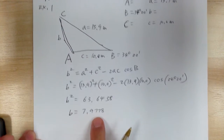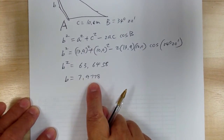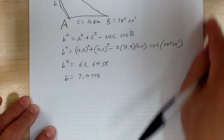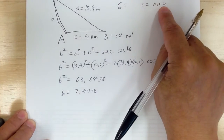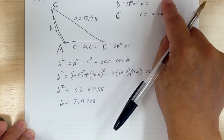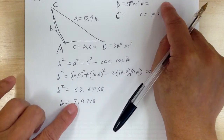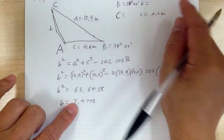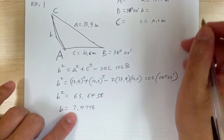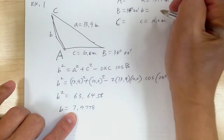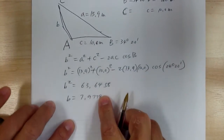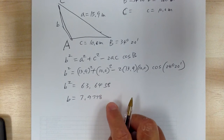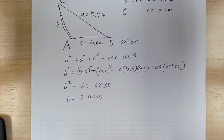Go ahead and work it out — punch all these numbers into your calculator. So you get B squared equal to 63.6458, give it a few extra digits. And so B equals 7.9778; again give it a few extra digits. When you write your final answer, follow the number of decimal places given. Notice there's one decimal place, so let's go with 8.0 meters.